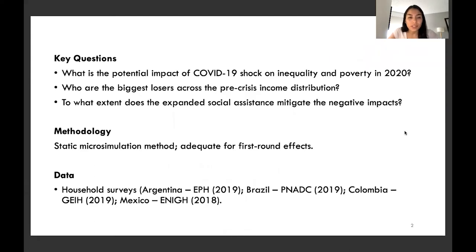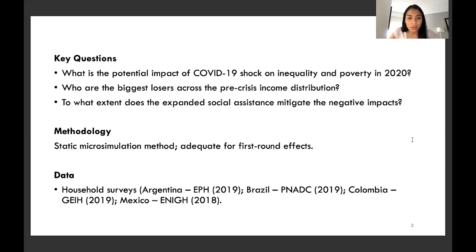This paper addresses three main research questions: first, what is the potential impact of COVID-19 on inequality and poverty in 2020; second, who are the biggest losers across the pre-crisis income distribution; and third, to what extent does the expanded social assistance mitigate the negative impacts. We obtain our estimates by simulating potential income losses at the household level using micro data from household surveys.